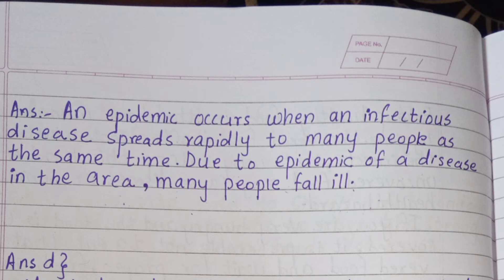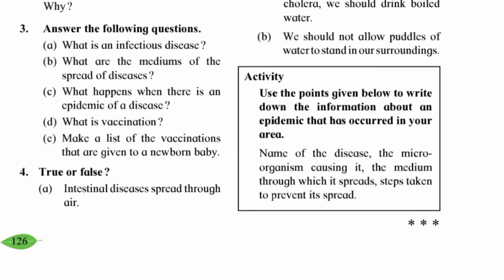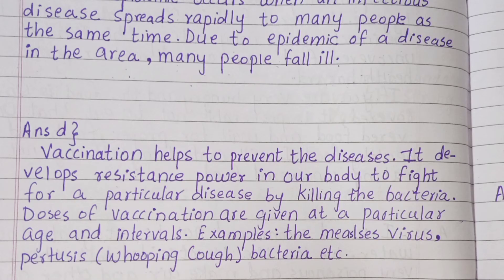Question three C: What happens when there is an epidemic of a disease? Answer: An epidemic occurs when an infectious disease spreads rapidly to many people at the same time. Due to an epidemic in the area, many people fall ill.